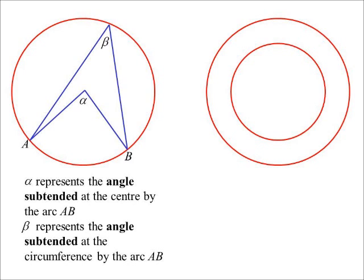Two circles with the same center are called concentric circles.